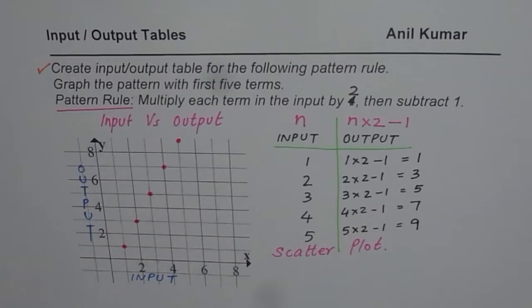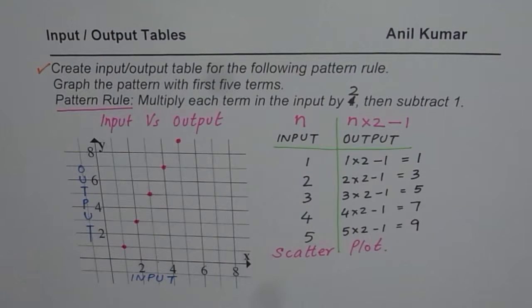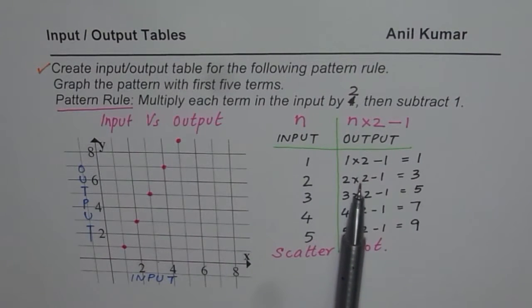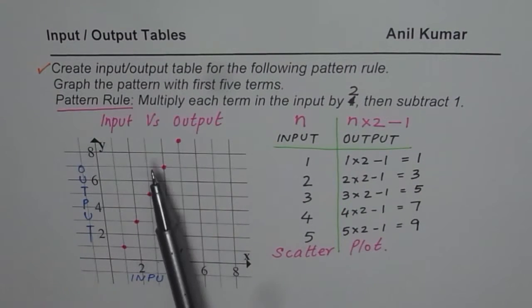So that is how you have to link the pattern rule with input-output table and the graph. I hope the concept is clear to you. And what you will observe is set of points on the graph which should not be connected by a straight line. So it shows a pattern. And the pattern you see is that every number is increased by 2. Do you see that? Increased by 2. So every time that times 2 makes increase by 2.